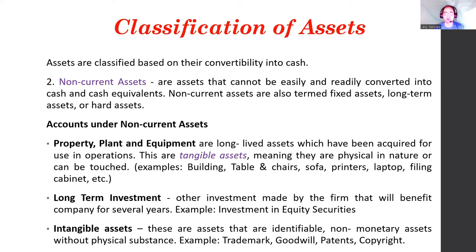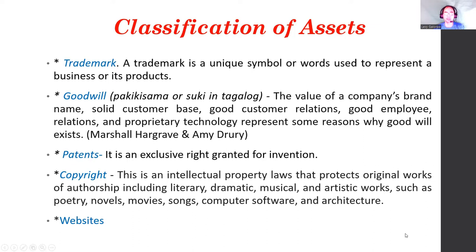Intangible assets have no physical characteristics — we cannot touch them. Websites are also considered intangible assets today. A trademark is a unique symbol or words used to represent a business or its product. Goodwill is the value of a company's brand name, solid customer base, good customer relations, good employee relations, and proprietary technology. A patent is an exclusive right granted for an invention. A copyright is an intellectual property law that protects original works of authorship including literary, dramatic, musical, and artistic works such as poetry, novels, movies, songs, computer software, and architecture.